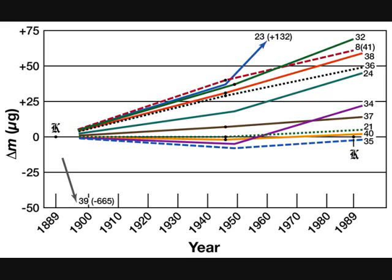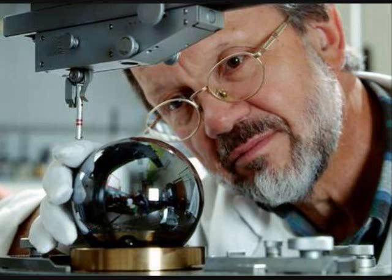Over time, there's still a variation among the copies when compared to the original prototype kilogram. Because the prototype kilogram is equal to one kilogram, we have to show the variations as the copies. But this suggests that this system is not perfect, so we have to look for other things.